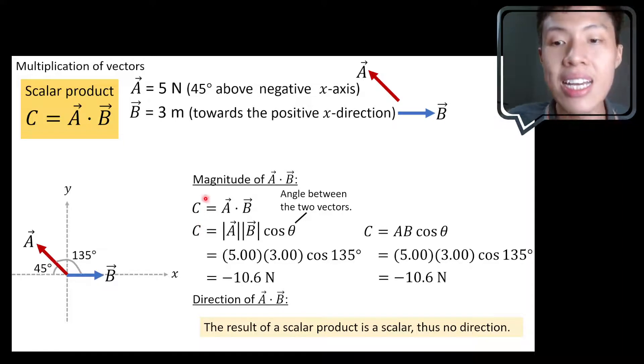So in this case, C is a scalar quantity to begin with. C is not a vector. Therefore, C can have positive or negative value.